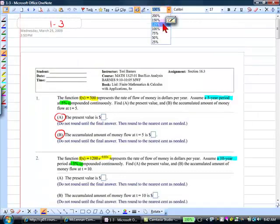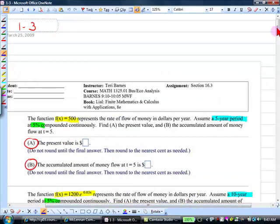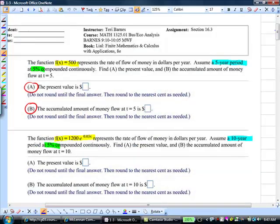All right, the function f of x equals 500, so there's your f of x, 500. It doesn't have an x in it. That's fine, it's still a function. It represents the rate of flow of money in dollars per year. Assume a five-year period at five percent compounded continuously. Find the present value and find the accumulated amount of money flow at time t equals five. So what's our r? It's five percent. We're going to use 0.05 for that, and t is what? Five.